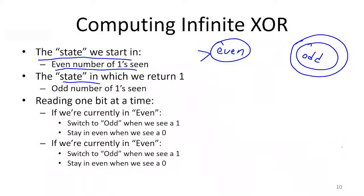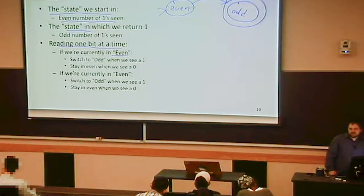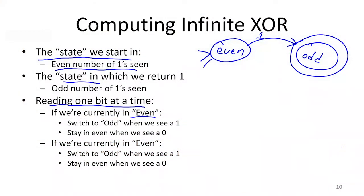As we compute on this automaton, we read one bit at a time from our input. If our current state is even, we switch to odd whenever we see a one — even transitions to odd when the input is a one. When we're in even and we see a zero, we stay in even, because we haven't changed the parity of the number of ones seen. Similarly, if I've seen an odd number of ones and I get a one as input, I've now seen an even number, so I update to even. If I'm in odd and I see a zero, I stay in odd.